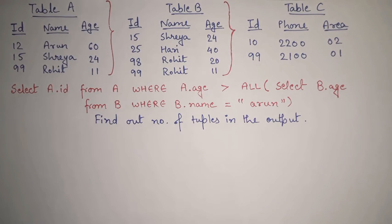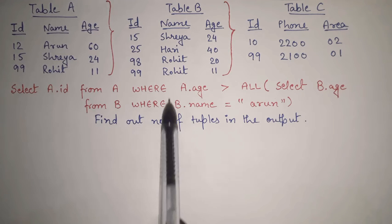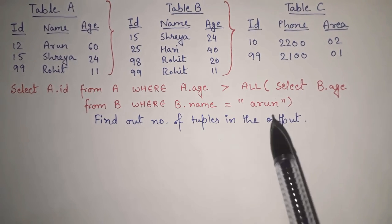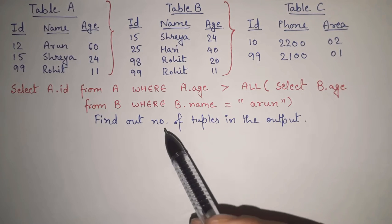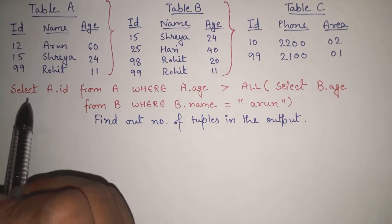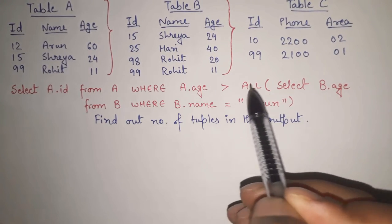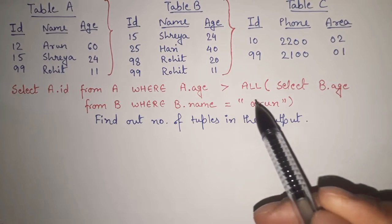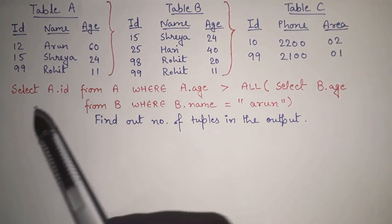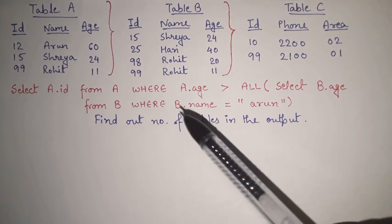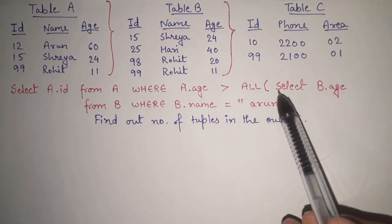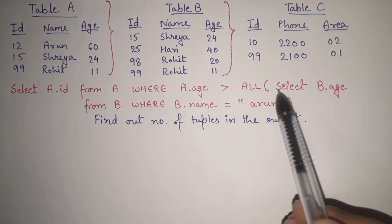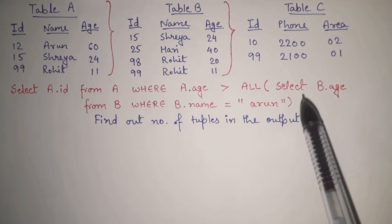We need to find how many rows are in the output. To do that, we need to evaluate the query. This is actually a nested query — one SELECT inside another SELECT. The rule for nested queries is that we always execute the inner subquery first. So we will evaluate the inner query first, then the outer query.